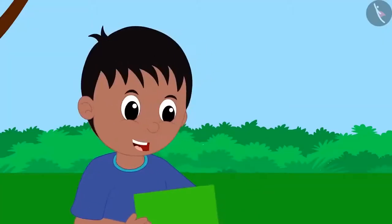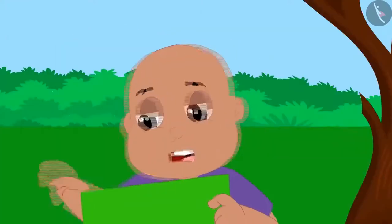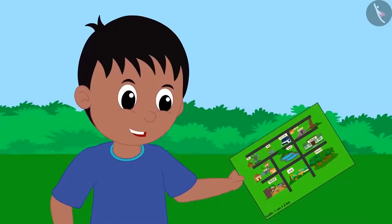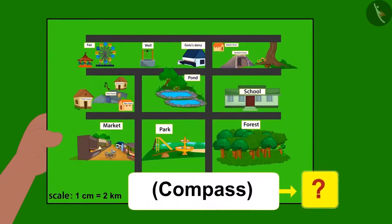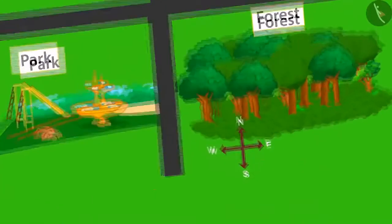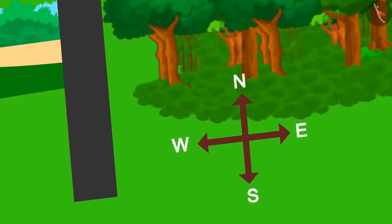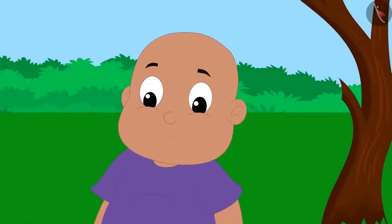Bablu asked how Raju found that out, and what 'towards the south' means. Raju asked if Bablu could spot the compass given on the map. Bablu couldn't find it, so Raju took a look and realized there was no compass on Bablu's map. Raju then showed Bablu the compass drawn on his own map. Bablu asked how they are supposed to use it and what the directions mean.